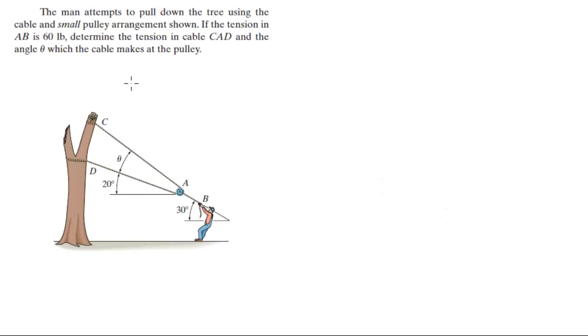For more videos visit forthesakeofducation.com. This problem states: a man attempts to pull down a tree using a cable and a small pulley in the arrangement shown. If the tension in AB is 60 pounds, determine the tension of cable CAD and the angle theta in which the cable makes with the pulley.